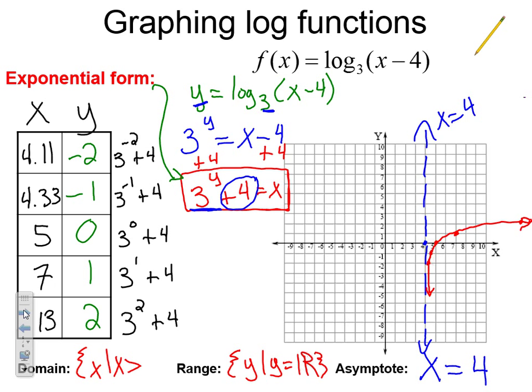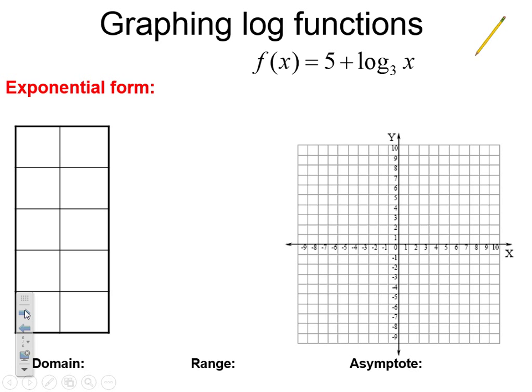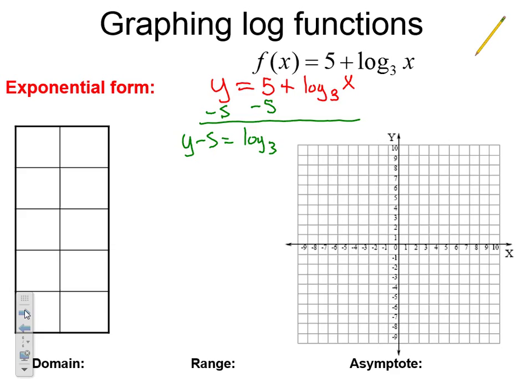Moving on to our last example. We need to rewrite in exponential form: y equals 5 plus log base 3 of x. First, get the log by itself — subtract 5 from both sides to get y minus 5 equals log base 3 of x. Rewriting: the base is 3, the exponent is (y minus 5), so 3 to the (y minus 5) equals x. Since nothing is added to x, our asymptote is x equals 0.